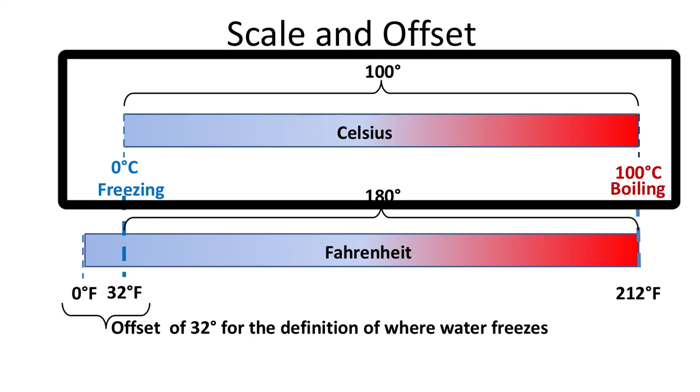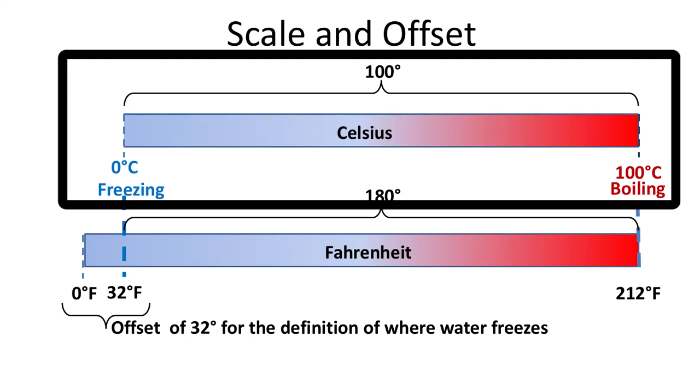If I lay out the temperature scales horizontally, for Celsius, the range from freezing to boiling is 0 degrees to 100 degrees. The difference between freezing and boiling is 100 degrees. For Fahrenheit, the range from freezing to boiling is 32 degrees to 212 degrees, which is a difference of 180 degrees.